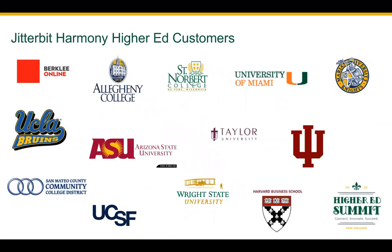As you take a look at some of our higher ed customers, you will see big schools like the University of Miami and small schools like Allegheny College. You'll see traditional campuses like Marion University and online institutions like Berklee Online. All of these schools have different systems with different requirements, but we're all able to successfully connect using Jitterbit. We're going to take a look at five of our connected campus customers and see what requirements they had and how they were able to achieve a connected campus.